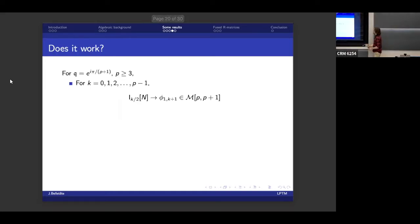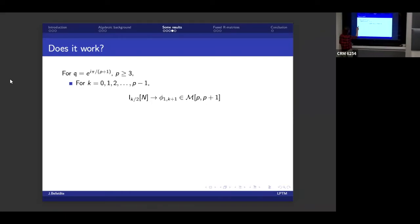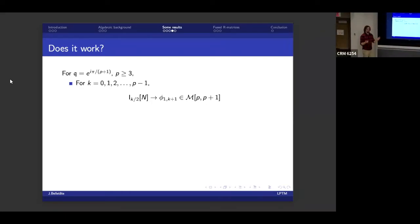But now the big question, does it work? Is this thing actually related to the fusion product of CFT? So the cases where we know for sure what is the continuum limit, these are root of unity cases. In particular, we're looking at cases where q is e^{3iπ/(p+1)}, with p bigger or equal to 3. So p equal 3, that's the Ising model, and then increasing from there in minimal models.